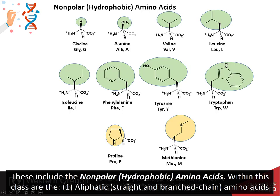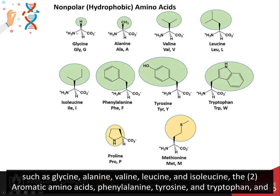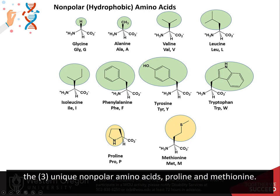These include the nonpolar hydrophobic amino acids. Within this class are the aliphatic, straight-chained, or branch-chained amino acids such as glycine, alanine, valine, leucine, and isoleucine. The aromatic amino acids include phenylalanine, tyrosine, and tryptophan. And the unique nonpolar amino acids, proline and methionine.